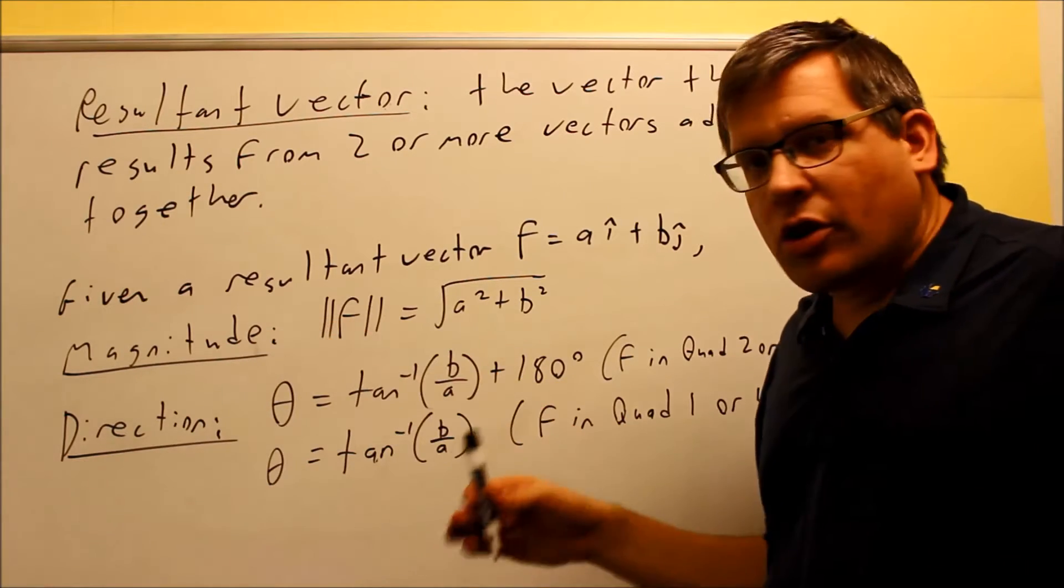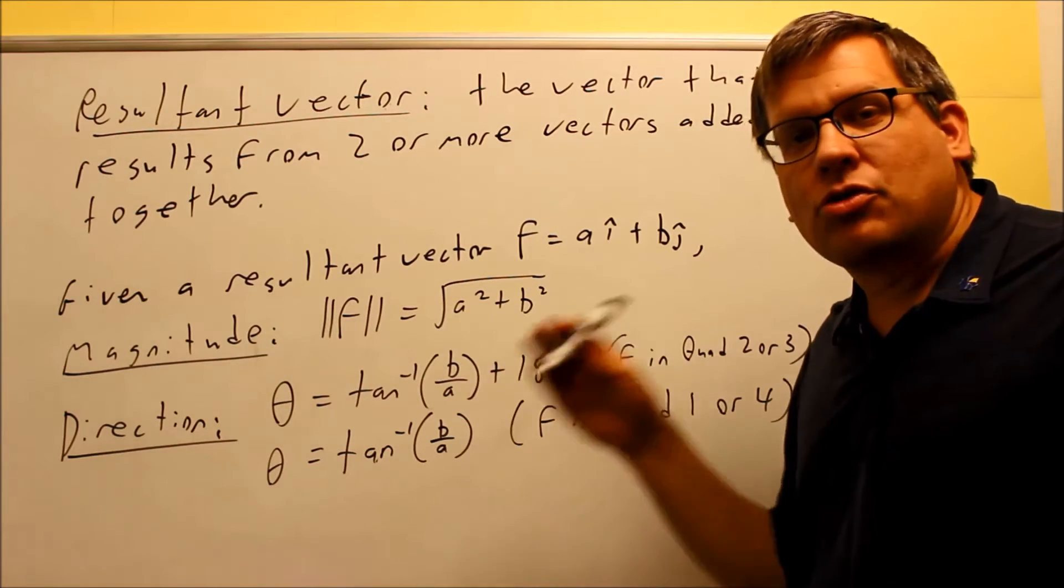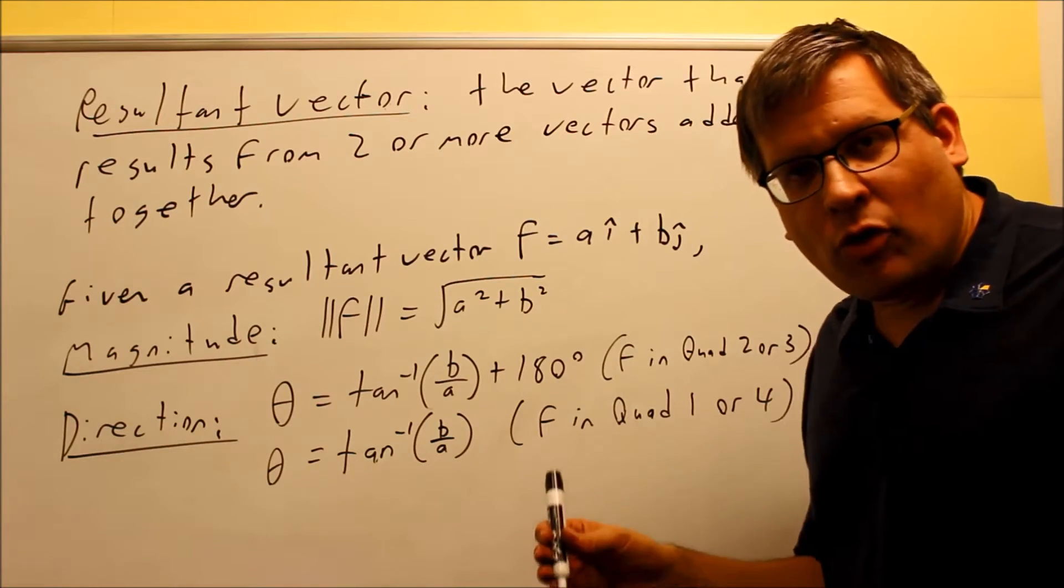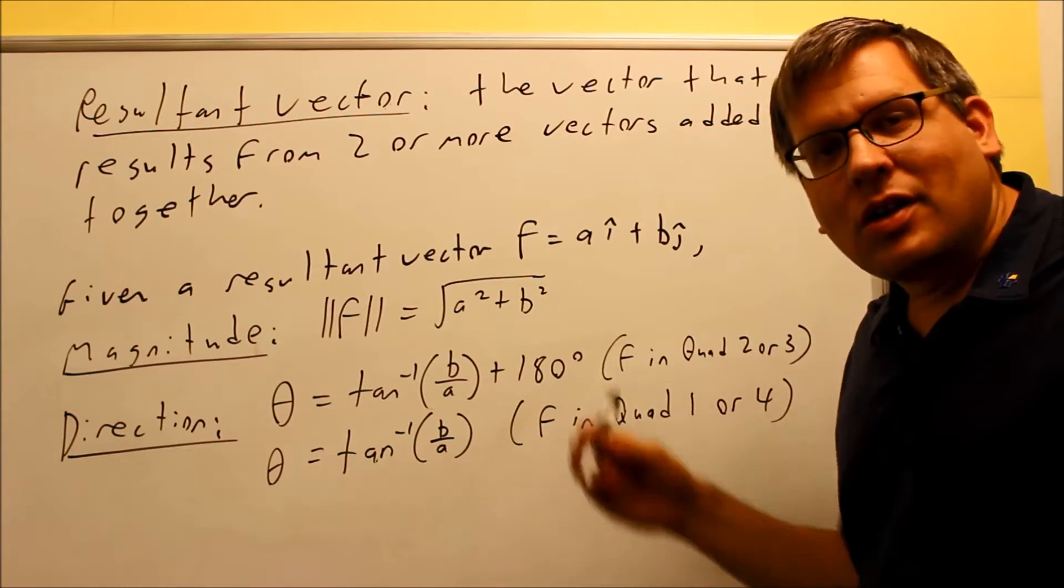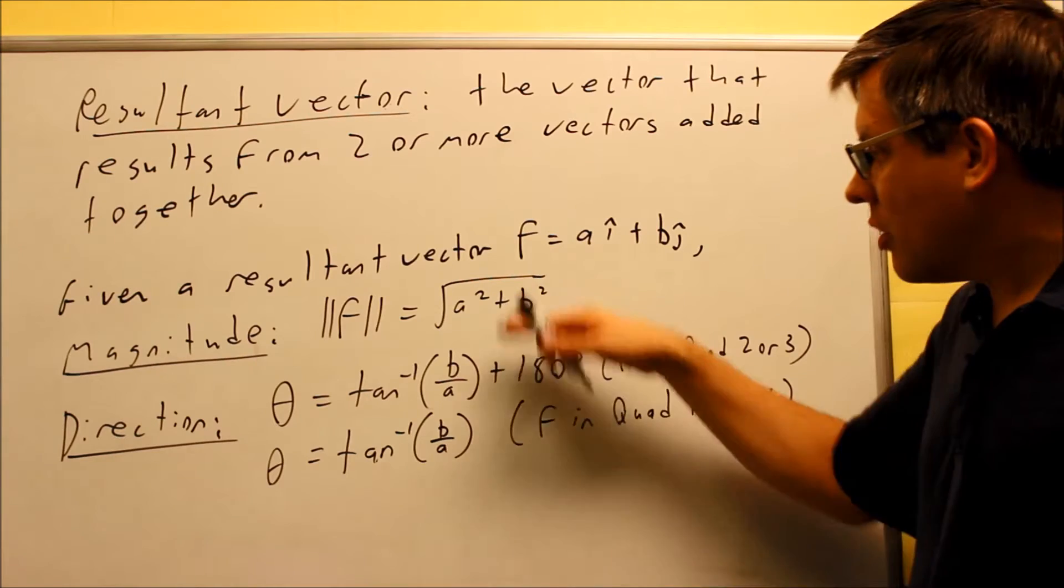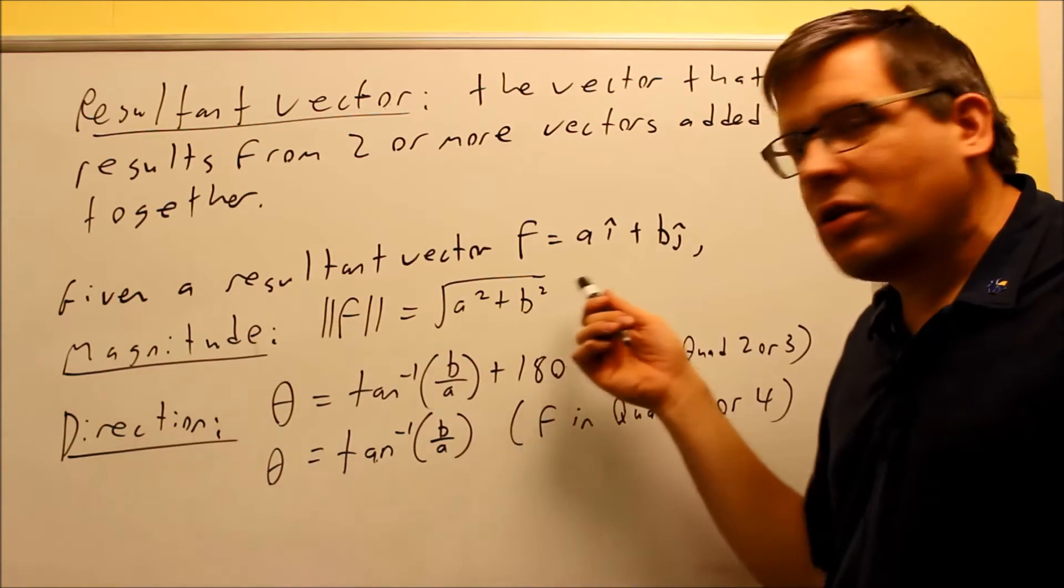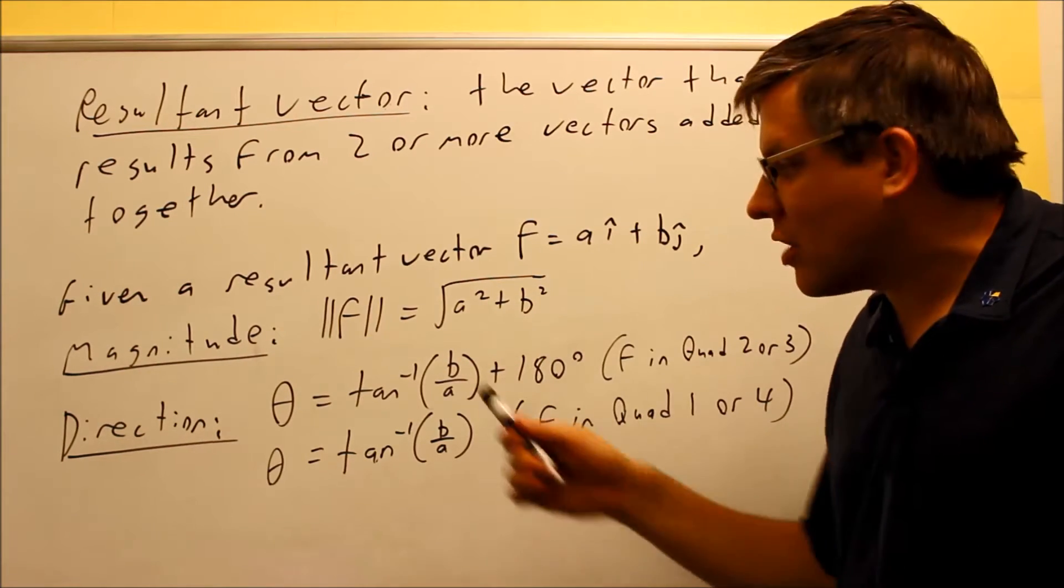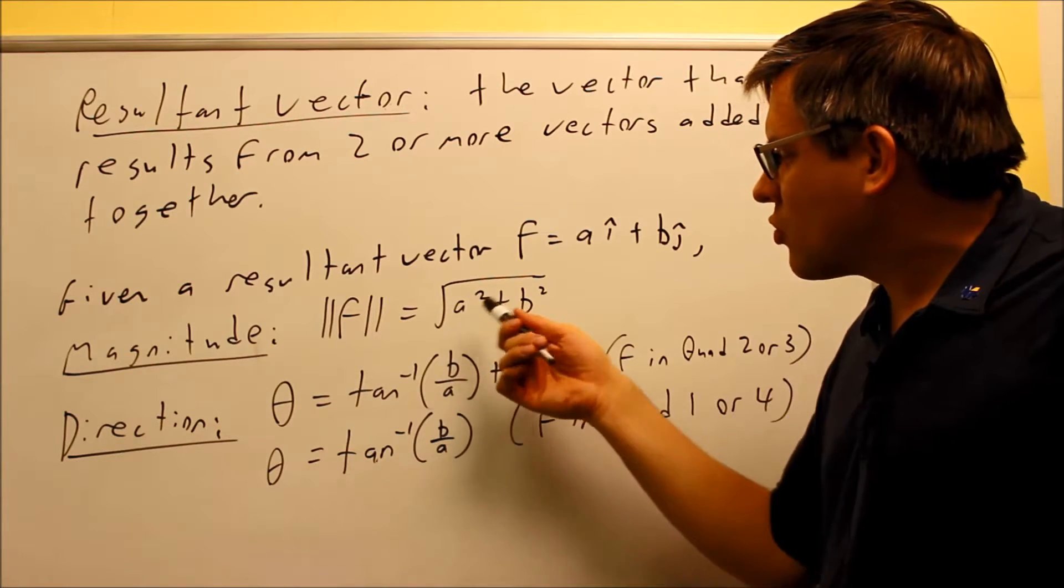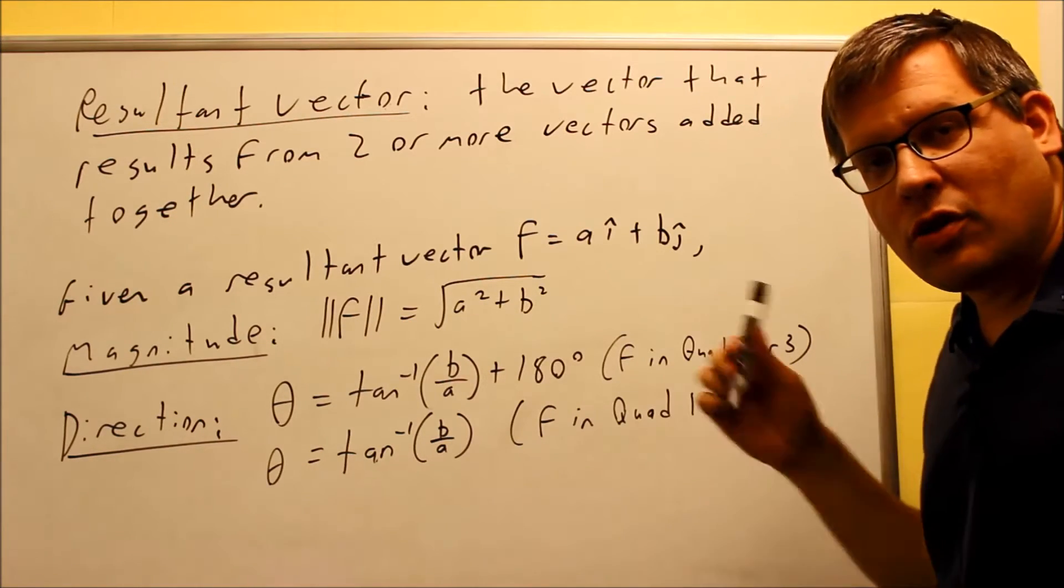Okay, now usually the question is going to ask you to find the magnitude and direction of the resultant force. So once you add it all together, then we want to find these two things. So here basically it's going to be, now magnitude is nothing new, that's the same formula we've been working with already in this section. Magnitude of v is just the square root of a squared plus b squared, nothing new there.